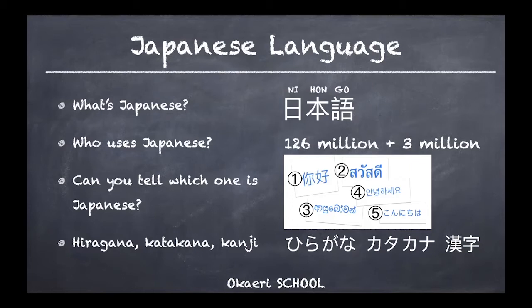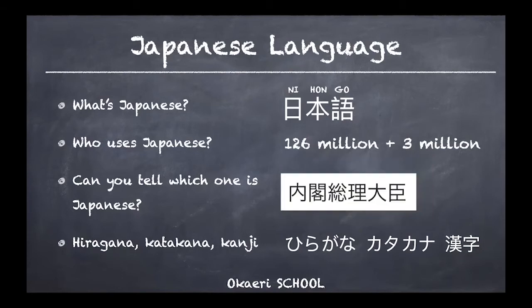Number one is Chinese, number two Thai, number three Sinhala, number four Korean, and number five — that one was Japanese. I hope you found the right one. If you didn't, that's still okay because that's what we're doing right now — learning. You might have guessed maybe number one looks similar because we do use similar characters.